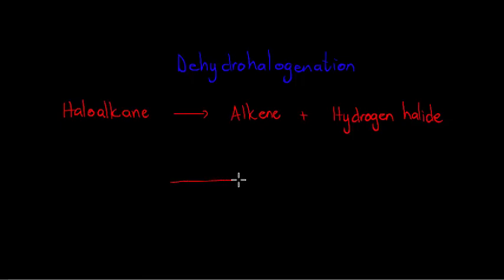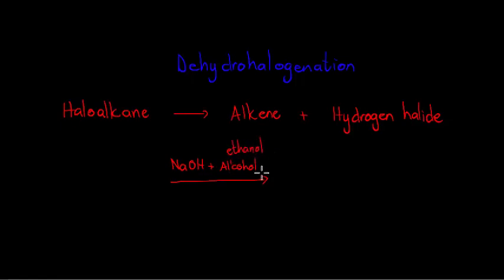The halo alkane in liquid form is going to be mixed with sodium hydroxide, which is dissolved in an alcohol — for example, ethanol. We'll do alcohols in the next lesson, but ethanol refers to two carbons with a hydroxide as part of its chain. So the sodium hydroxide is going to be mixed with the ethanol.